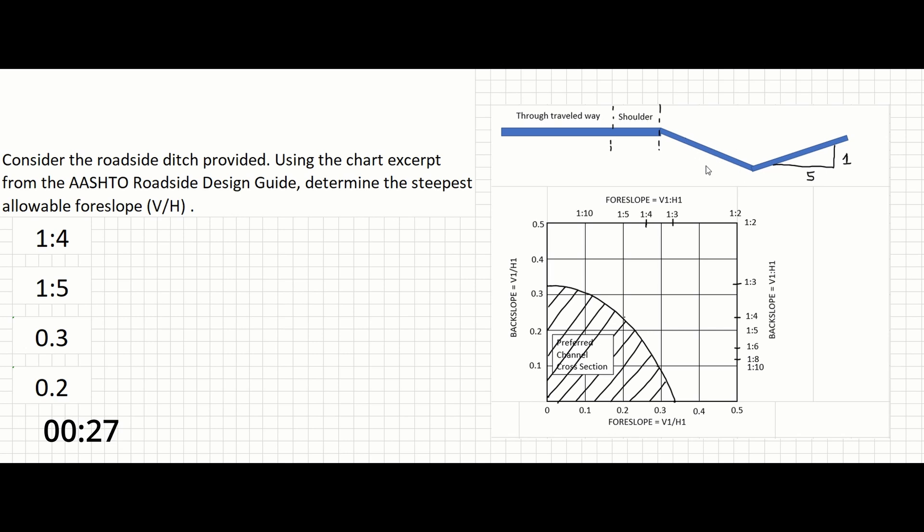First, we need to recognize that foreslope is the first slope leading down from the roadway to the bottom of the V-ditch, and the backslope is the second slope leading back up to the ground surface.